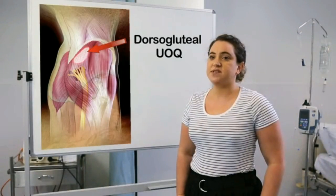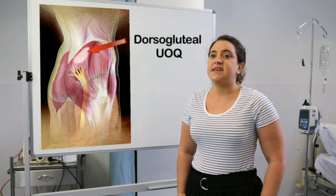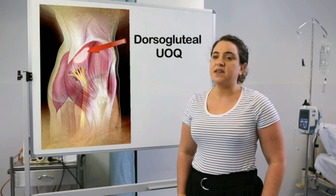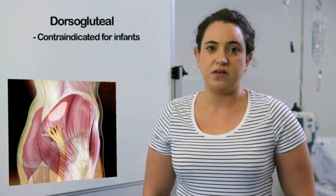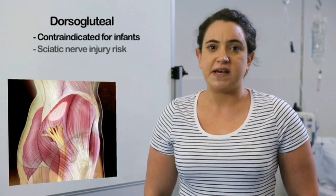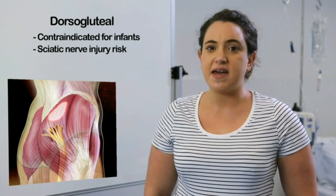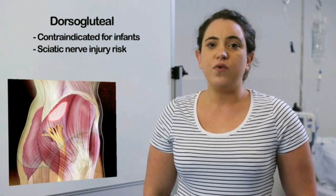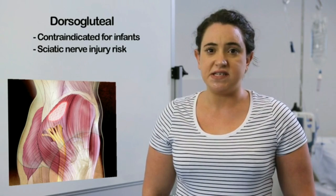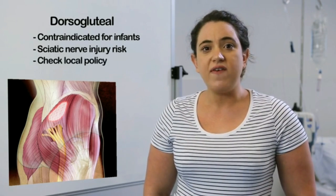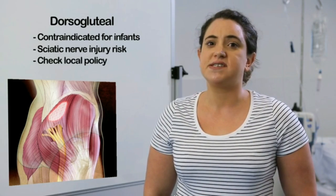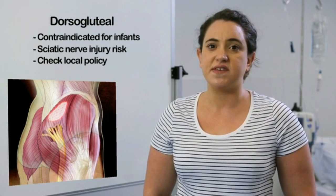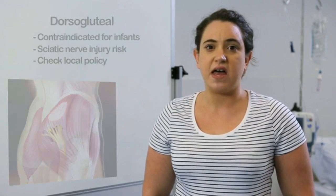The dorsogluteal site, or upper outer quadrant of the buttock, is the recommended site in the second edition of the Australian Rheumatic Heart Disease guidelines. However, this site is contraindicated in infants and young children. Injections into the dorsogluteal muscle have been associated with sciatic nerve injury; therefore, care must be taken to identify the site correctly. A number of health facilities are adopting policies contraindicating the use of this site unless there are no other sites available.